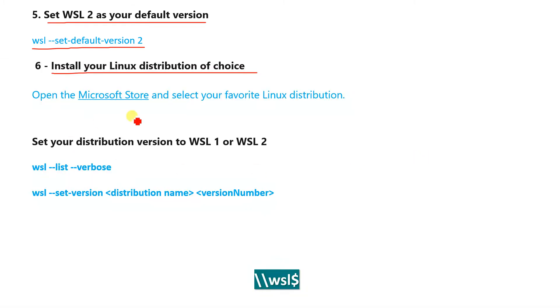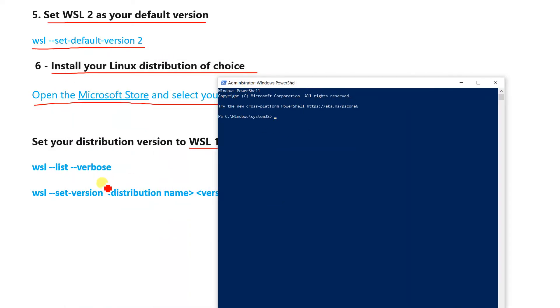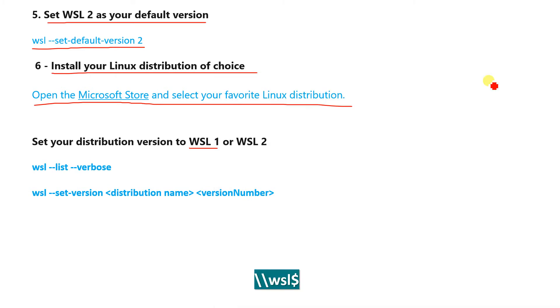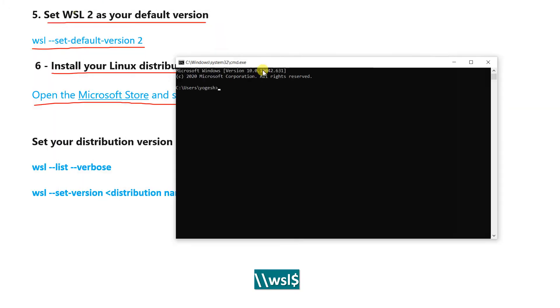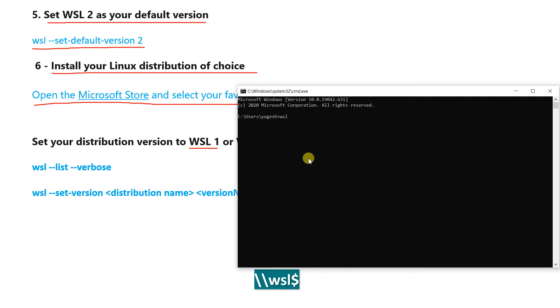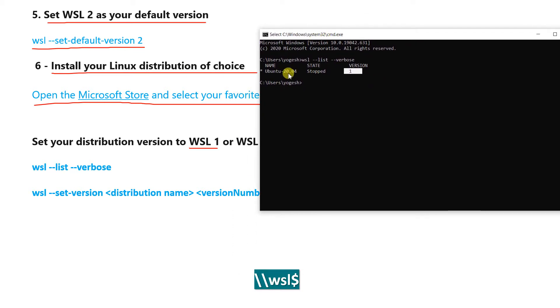In my case I have installed Ubuntu 20.04 LTS, which is the long-term support release. By default when you install from the Microsoft Store it will be WSL version 1. To check, run: wsl --list --verbose. You can see the state is stopped and the version is 1.